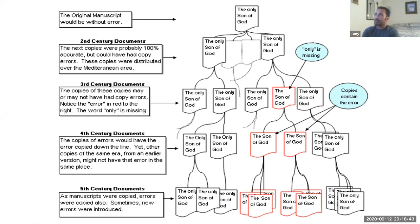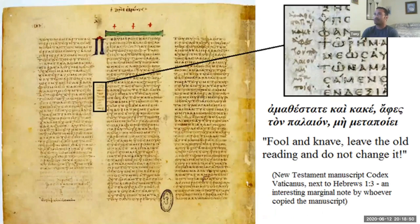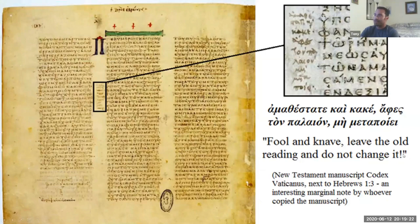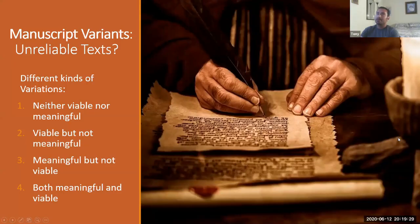Between all the differences, the main question is: what is at stake theologically? Is anything affected in the doctrine? Here's an interesting example from what appears to be the Codex Vaticanus — there's a footnote in the manuscript that says 'Fool and knave, leave the old reading and do not change it,' apparently written because a scribe had altered something and someone noticed and added that margin note.